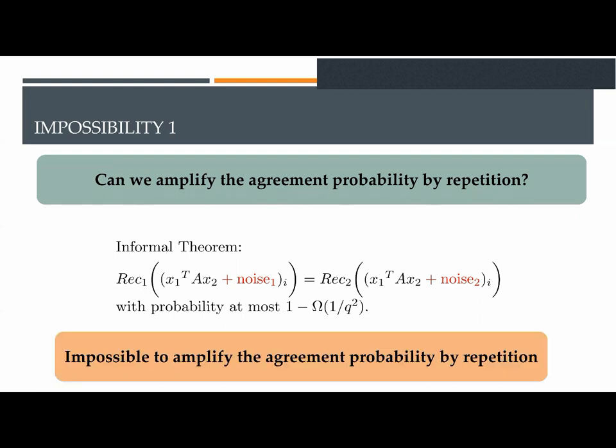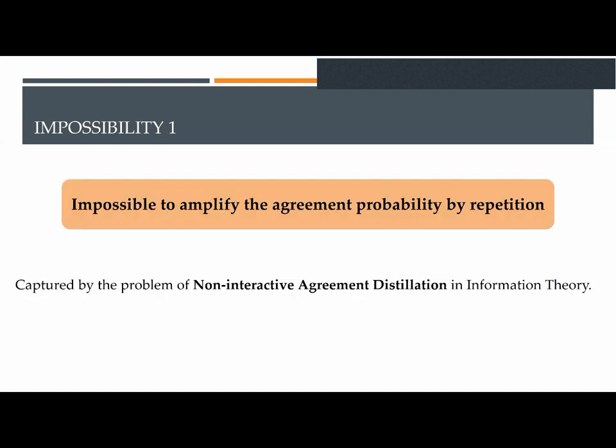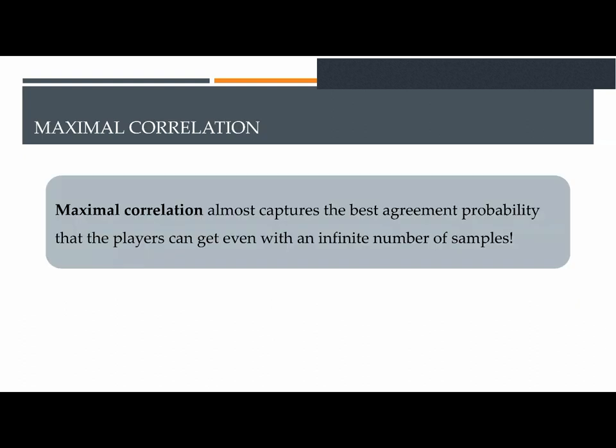Actually, modeling the problem of non-interactive key agreement in the approved way is captured by a problem studied in information theory called non-interactive agreement distillation. In non-interactive agreement distillation, Alice and Bob get correlated samples. Both players look at their shared randomness and apply a function and output a bit. Their goal is to maximize the probability that their outputs agree.